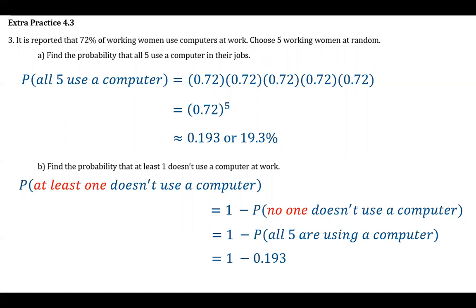So we just have to do one minus 0.193, and that comes out to be 0.807. Or if you want to put it as a percent, that'd be about 80.7%. That one's kind of tricky just because the English part of it is a bit confusing, but hopefully you follow the mathematical idea there.